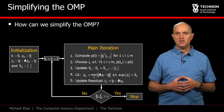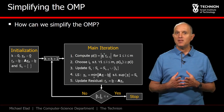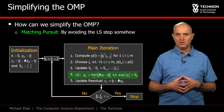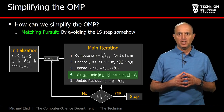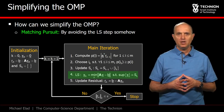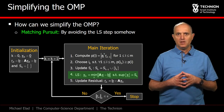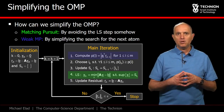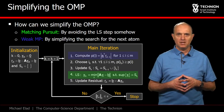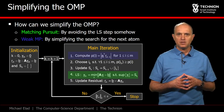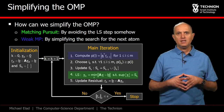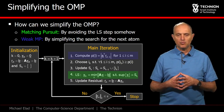We proceed by seeking ways to further simplify the OMP. We are about to meet the Matching Pursuit, an algorithm that changes the fourth least squares step of the OMP, thus resulting in a faster method. We will also meet the Weak Matching Pursuit, an algorithm that further simplifies the process by modifying step 1. Let's now go into the details of these two methods.